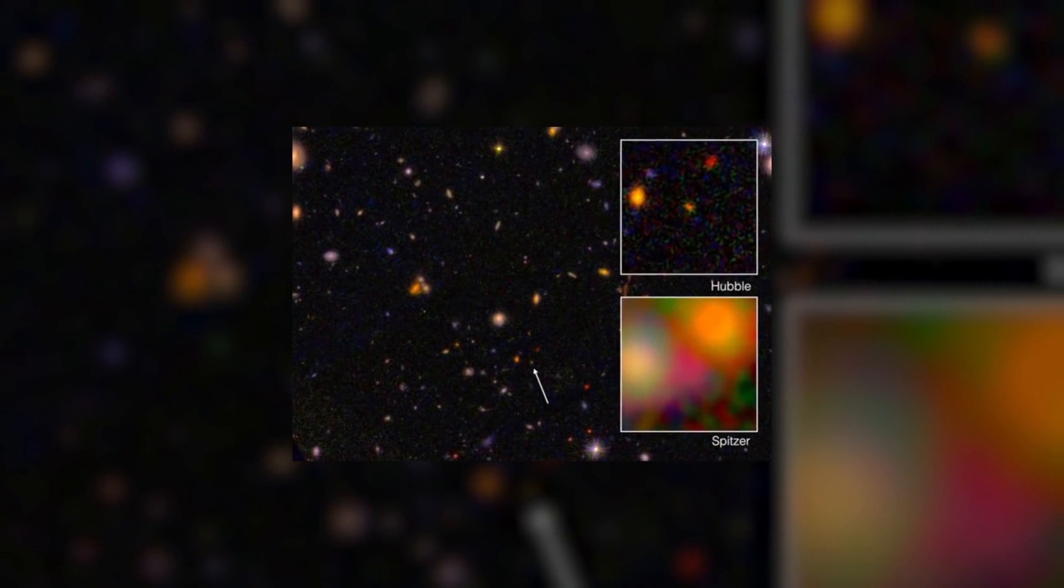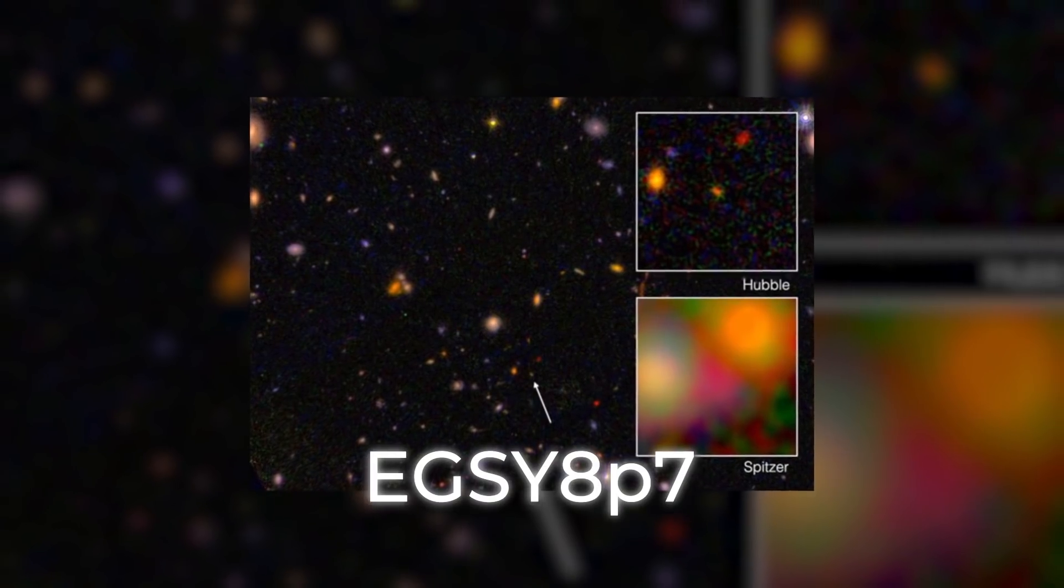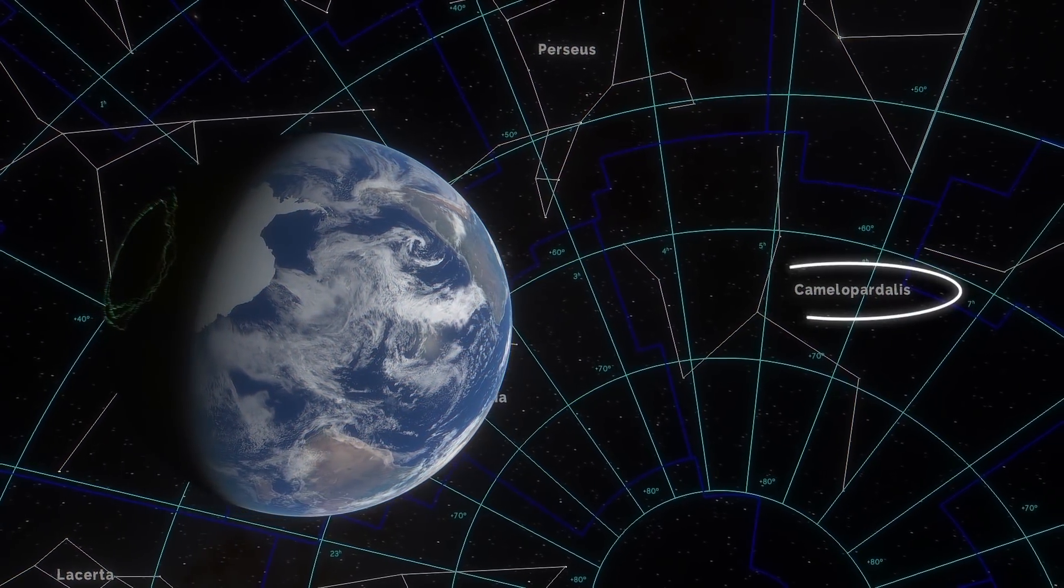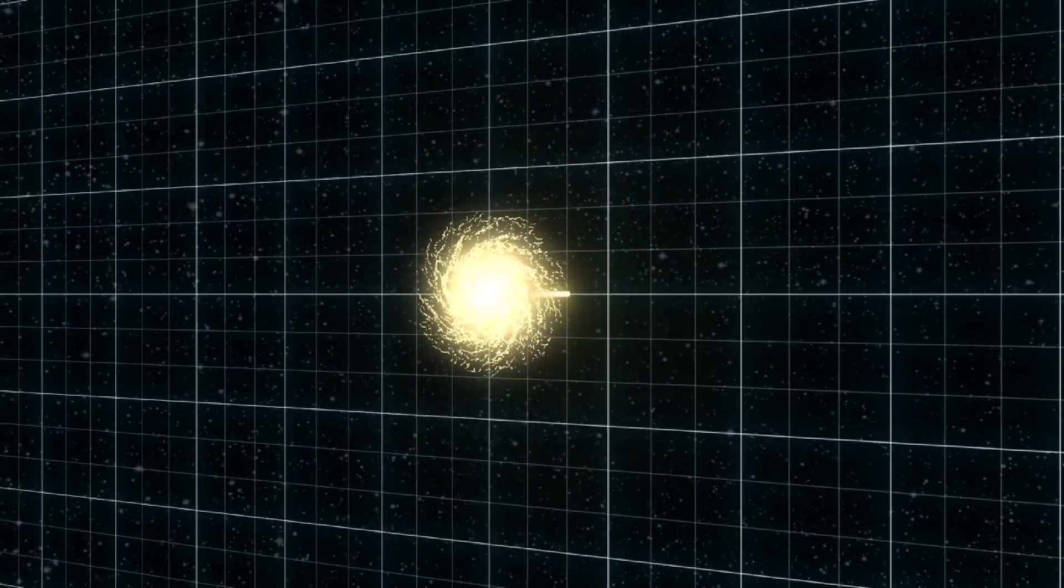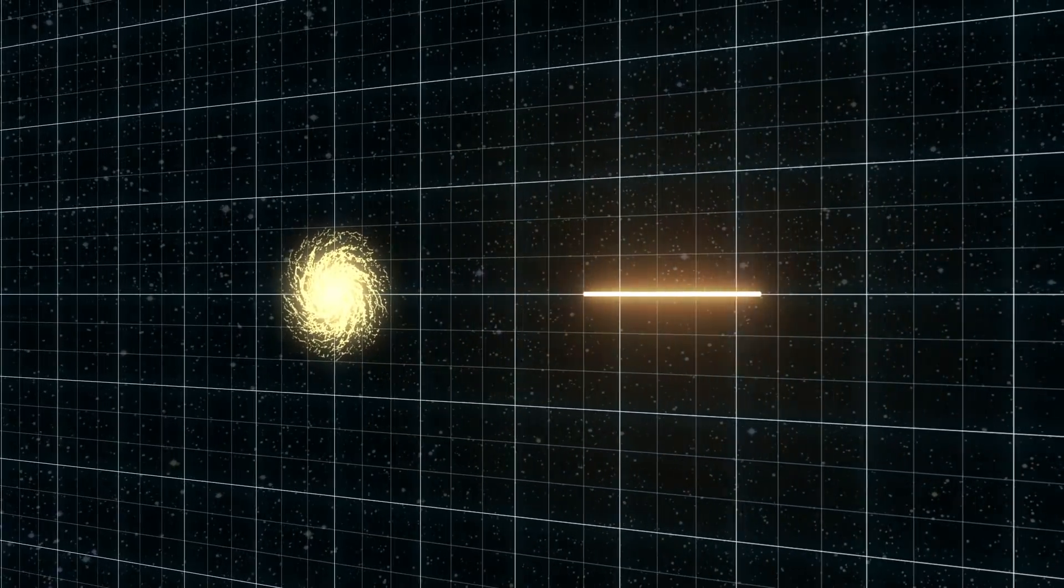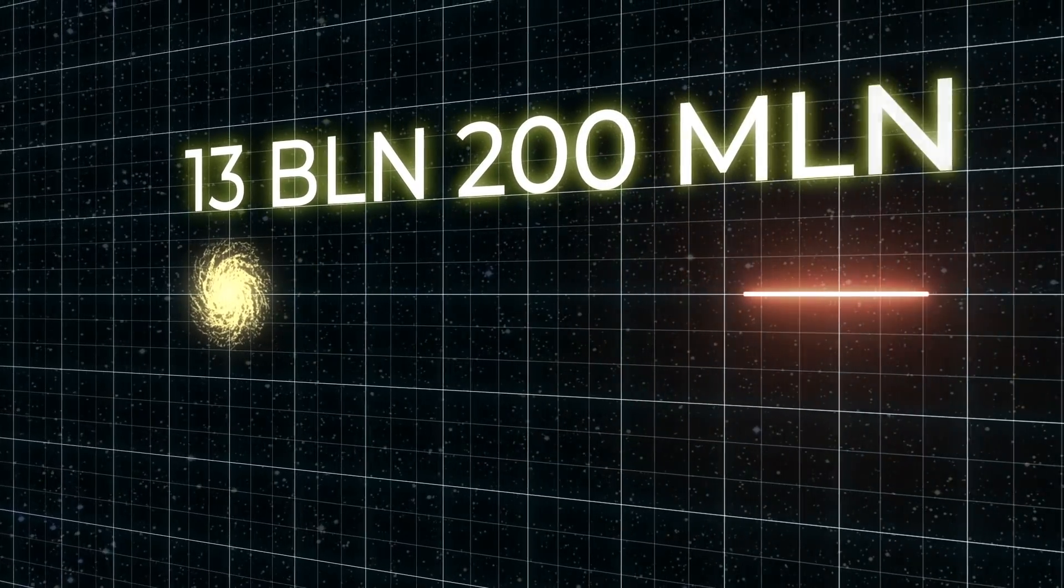For example, the galaxy EG SY 8P7 in the constellation Camelopardalis is the previous record holder. The light from its location took 13,200,000,000 years to reach the Earth. That far, just to have its photo taken.